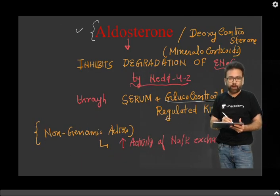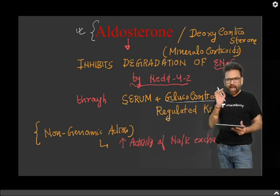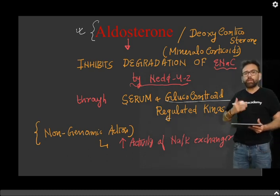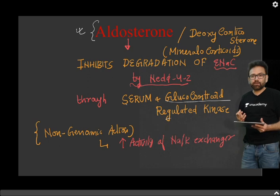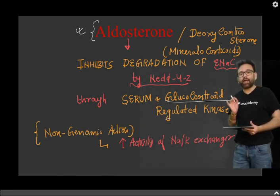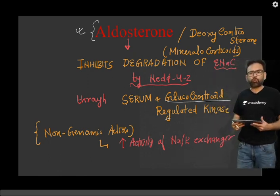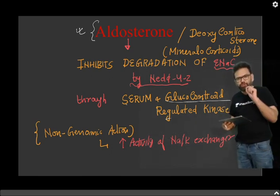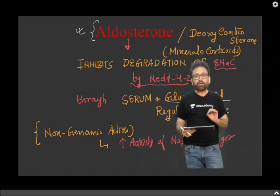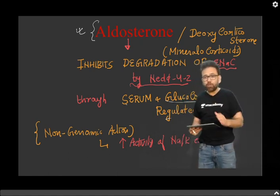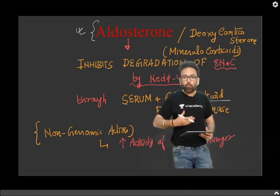So the action of aldosterone is to inhibit the degradation of ENAC by NEDD4-2. This works through a kinase — specifically, serum and glucocorticoid regulated kinase, or simply SGK. Aldosterone has two types of action: one is called genomic action and the other is called non-genomic action. The genomic action here is that it works on SGK, and the main point is to prevent degradation of ENAC, so that functioning of ENAC is improved and more sodium can be reabsorbed.